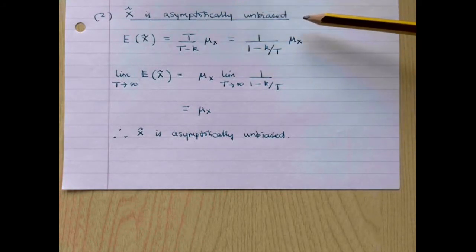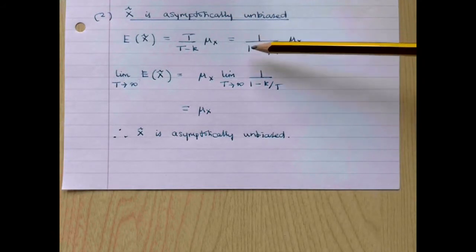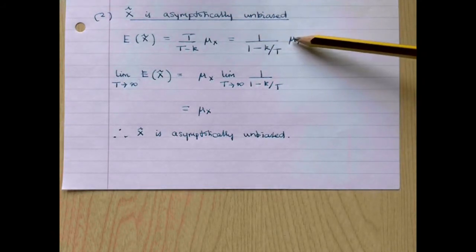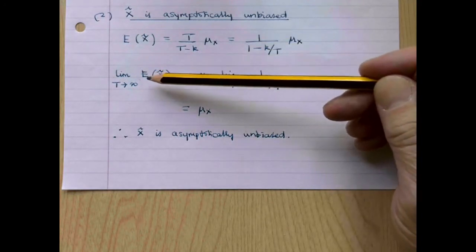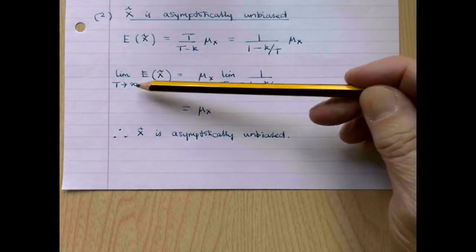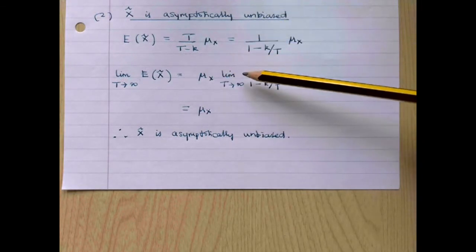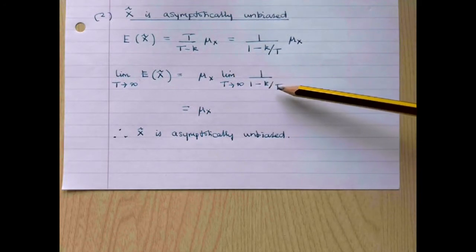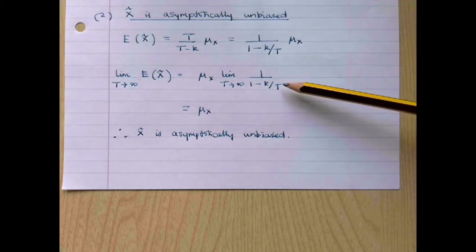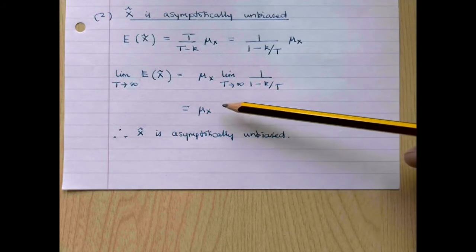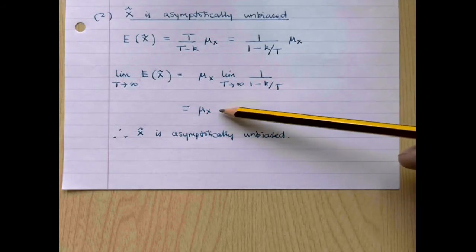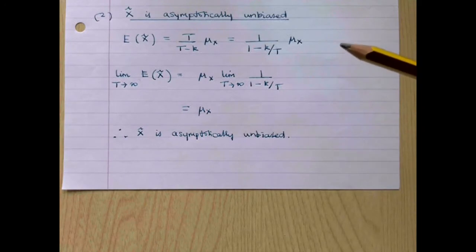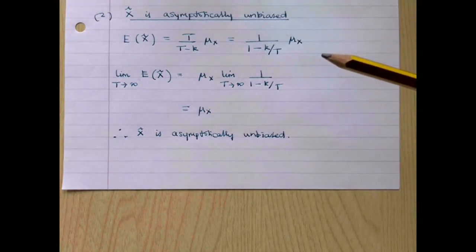Now if we divide numerator and denominator by T, we can write that as 1 over 1 minus k over T multiplied by mu x. And now, if we take the limit of the expected value of x tilde as T tends to infinity, that will equal mu x multiplied by the limit as T tends to infinity of 1 over 1 minus k over T. The k over T term will go to 0 as T goes to infinity, so the limit of the expected value of x tilde is just equal to mu x. In other words, x tilde is asymptotically unbiased in the sense that its expectation converges on the true population parameter as T tends to infinity.